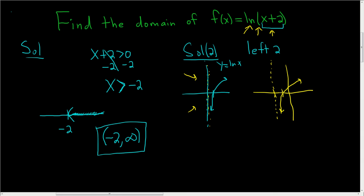And so from the picture, you can see that the domain is all of the x's. So we start at negative 2, and we don't include it. And we go all the way to infinity.